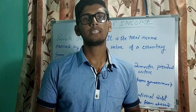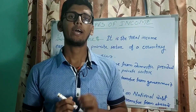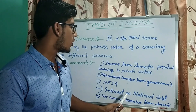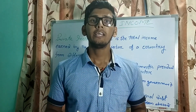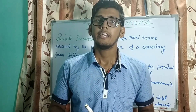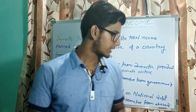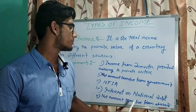The third component is net foreign income from abroad — this is the amount of money our private companies or private sector earn from abroad, which I have discussed in earlier videos. The fourth component is interest on national debt. The private sector provides various types of loans to the government, and the interest earned from that is calculated in private income.